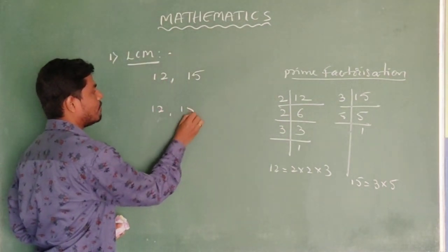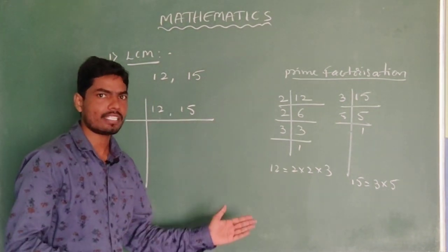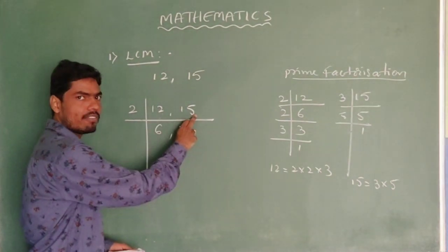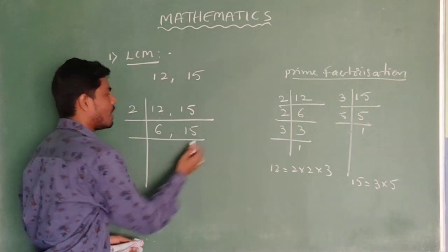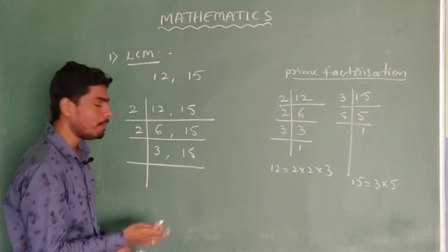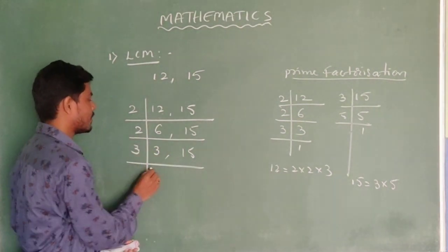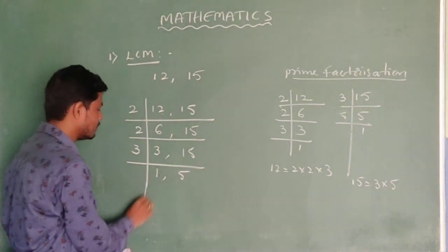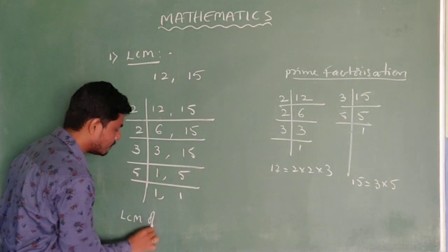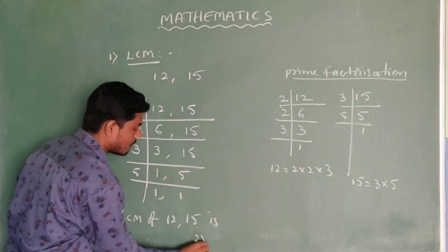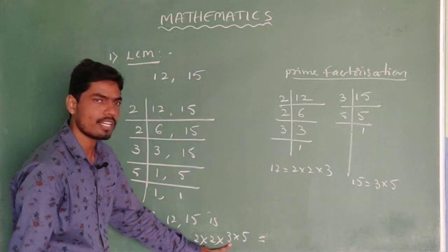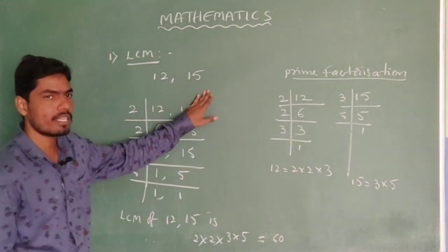For 12 and 15, we start the LCM procedure with the prime factor 2. Dividing: 2 goes into 12 giving 6, and 15 does not divide by 2 so it stays as is. Again take 2: gives 3, and 15 stays. Next take 3: 3 into 3 gives 1, and 3 into 15 gives 5. Then take 5: 5 into 5 gives 1. The LCM of 12 and 15 is 2 × 2 × 3 × 5. That is 2 × 2 = 4, 4 × 3 = 12, and 12 × 5 = 60. The LCM for these two numbers is 60.